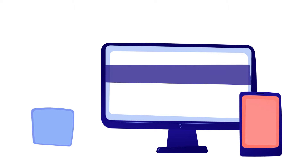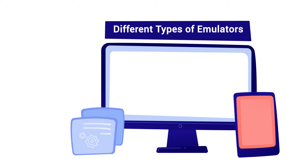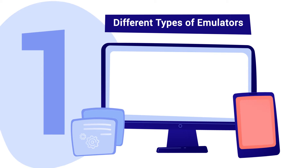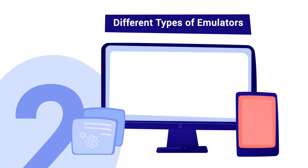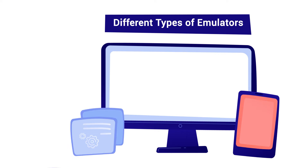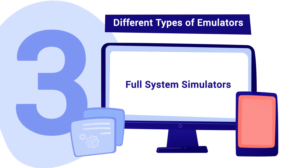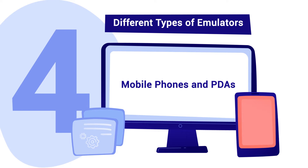Different types of emulators. Emulators come in 10 general categories: 1. Central processing units, 2. Computer system emulators, 3. Full system simulators, 4. Mobile phones and PDAs.